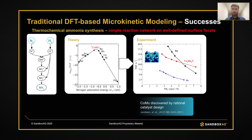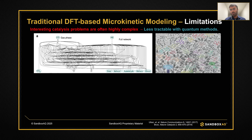Traditional DFT-based microkinetic modeling has a number of successes, but these are usually limited to simple reaction networks on well-defined catalyst facets. An example is thermochemical ammonia synthesis, where more than 20 years ago, theory was used to predict a cobalt molybdenum catalyst, which was then verified experimentally. A number of the problems we would like to solve today are highly complex and much less tractable with quantum chemistry-based methods. One reason is the reaction network — here I show an example for the conversion of CO and hydrogen into fuels and chemicals, and this is only a subset of the reaction network. There are so many reactions that it becomes very expensive to simulate all of them computationally.